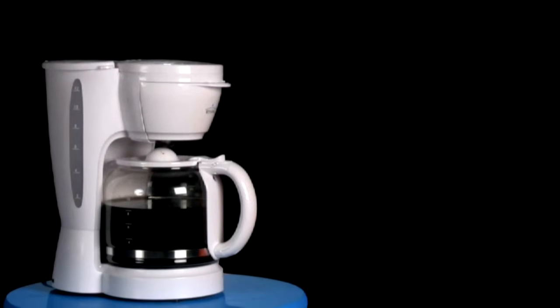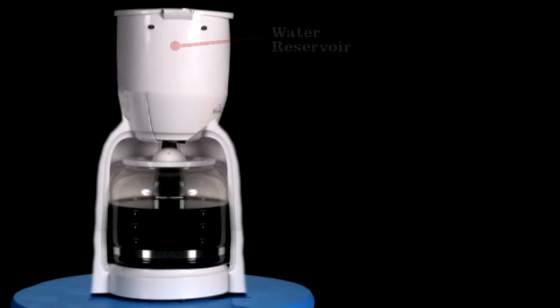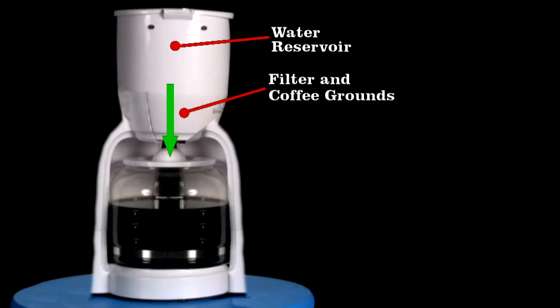Now of course, a coffee maker doesn't need to look like this, an engineer could have built this. Here I've moved the water reservoir to the top, which lets gravity drain the water through the coffee grounds, no water transfer problem to be solved.